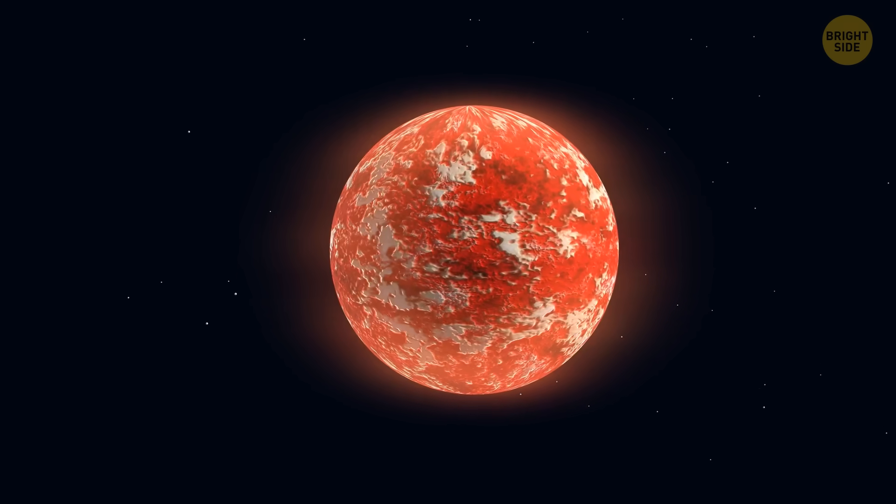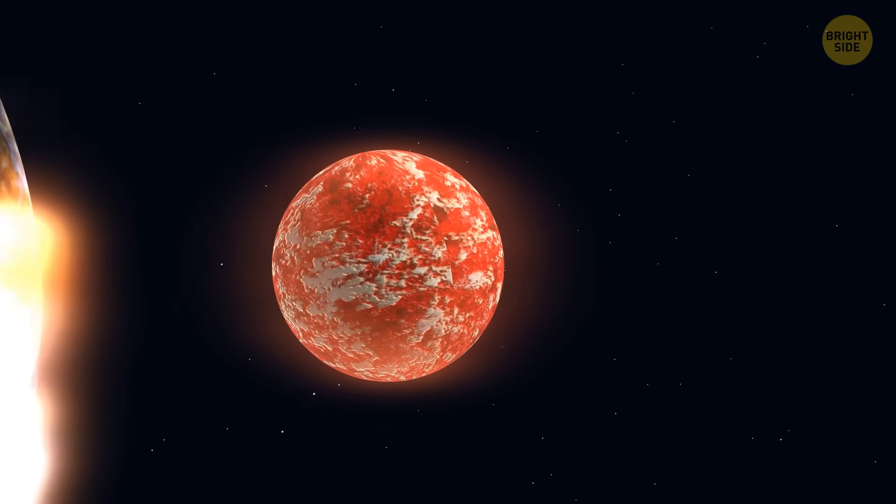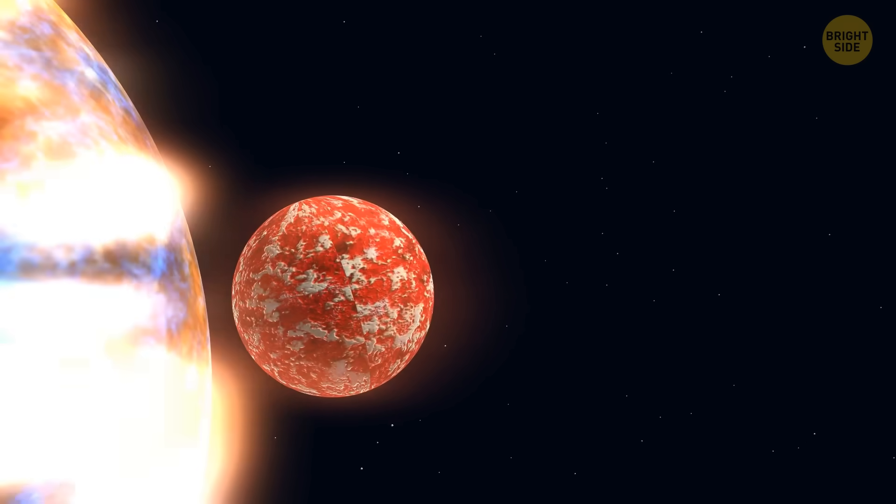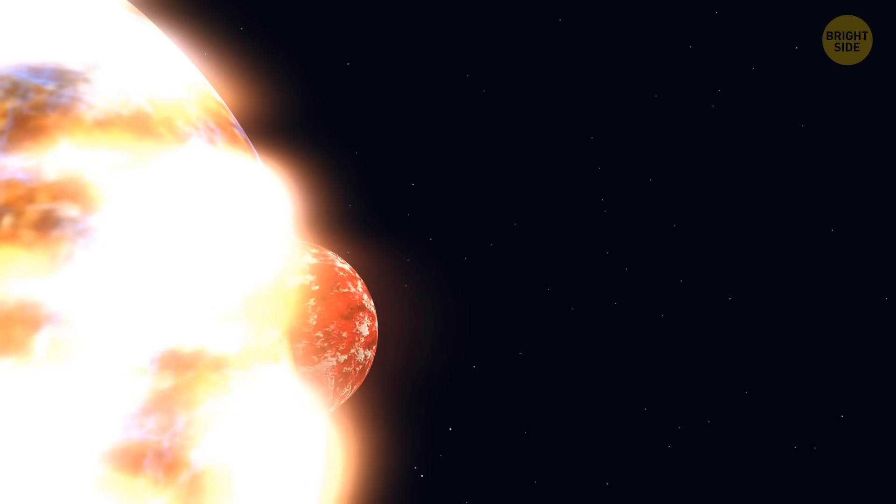The planet we're talking about had been gradually spiraling toward the star until it was pulled into its atmosphere and, eventually, into the core of the perishing star.